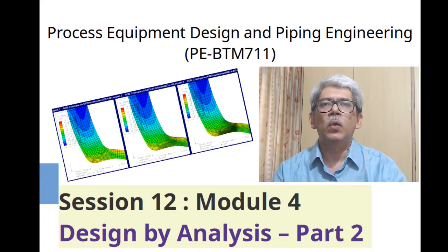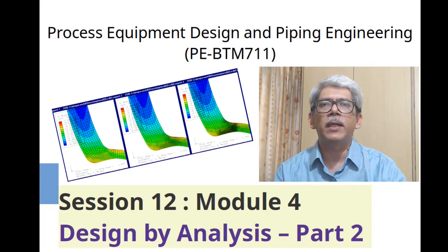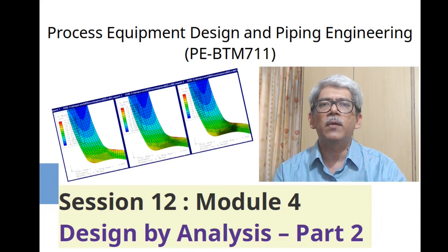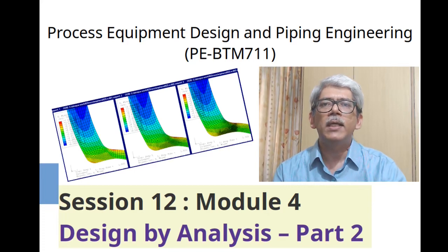For each of these checks, the code provides multiple alternative approaches to meet the needs of different users. In this session, we will understand the procedures for conducting these mandatory checks with the help of illustrative examples from actual real-life analysis cases. We will begin with an explanation of the material properties needed for analysis, followed by information about the ASME mandatory checks for design by analysis.